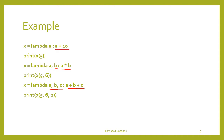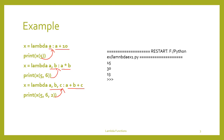For the first lambda function, the parameter passed to variable 'a' is 5. In the second case, a and b are assigned parameters 5 and 6 respectively. In the third case, 5, 6, and 2 are passed to a, b, and c respectively. The output of the first lambda function will be 15, the result of the second lambda function will be 30, and the third lambda function gives the sum of 5 plus 6 plus 2, which is 13.